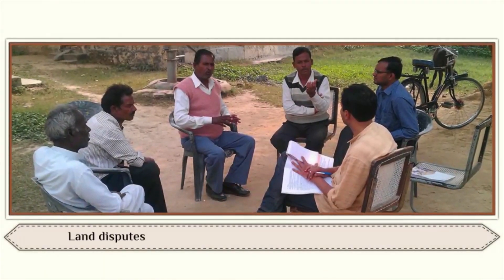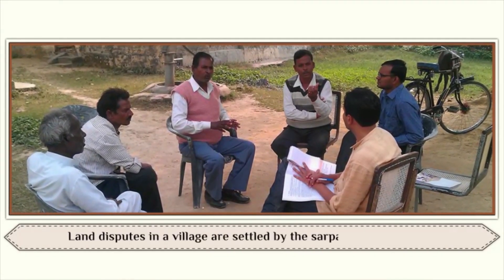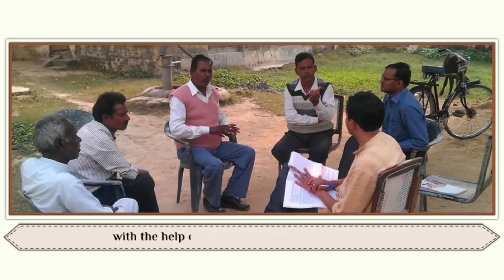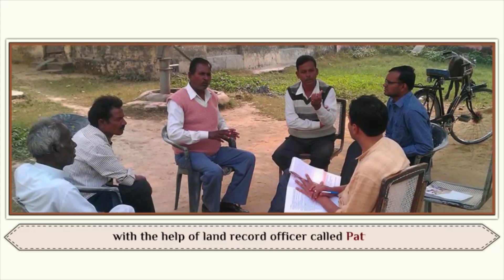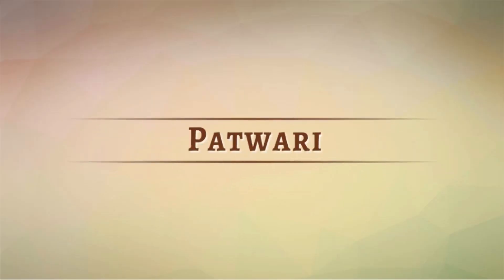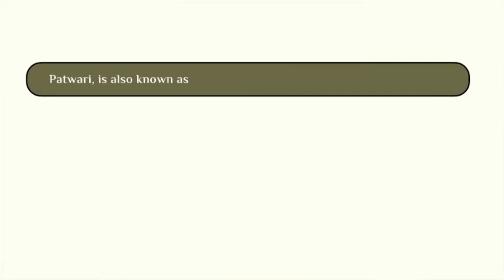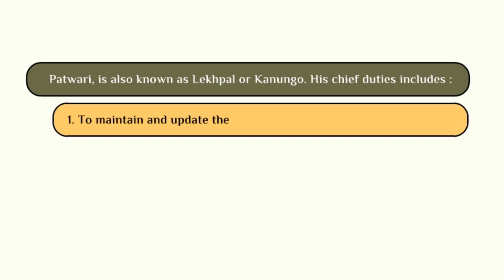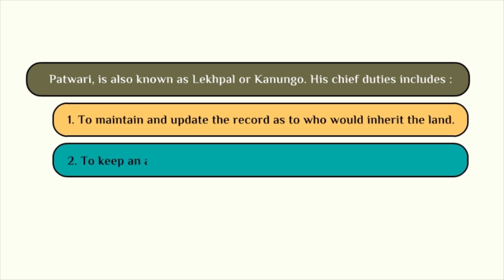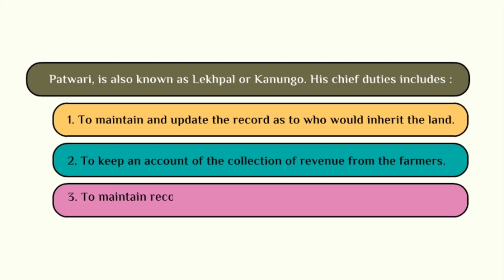Land disputes in a village are settled by the Sarpanch of the village with the help of a land record officer called Patwari. The Patwari, also known as Lekhpal or Kanungo, has chief duties including: maintaining and updating the record of who would inherit the land; keeping an account of revenue collection from farmers; and maintaining a record of crops grown at every harvest.